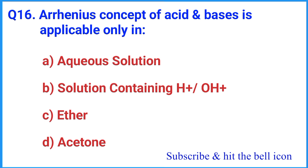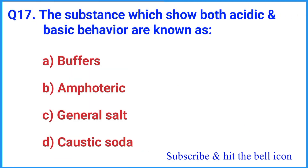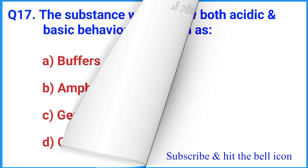Question number 16: Arrhenius's concept of acid and base is applicable only — the correct answer is option A: aqueous solution. Question number 17: The substance which shows both acidic and basic behavior is known as — the correct answer is option B: amphoteric.